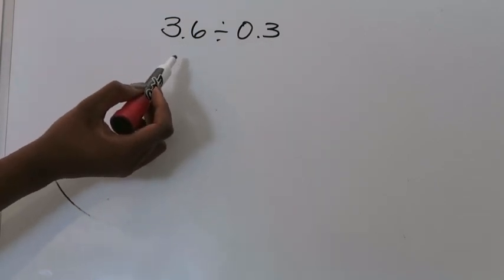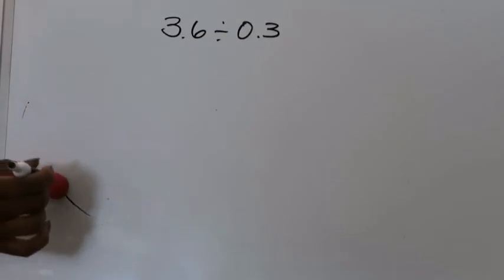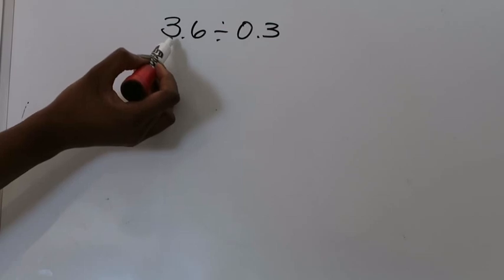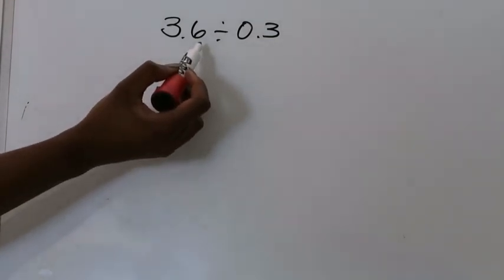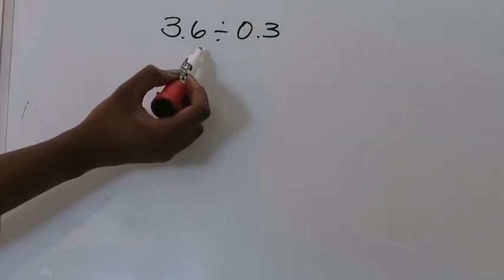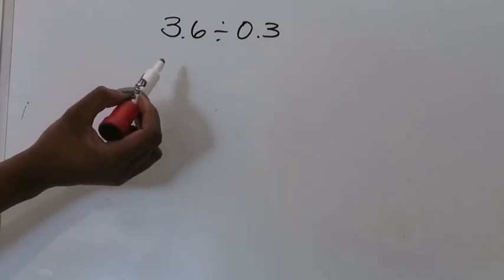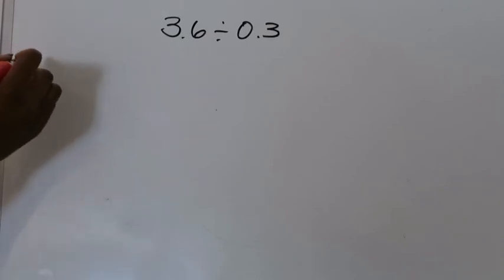I know that this is modeled in tenths, which means I need to model three and six tenths worth of tenths. Based on what I know from previous chapters, there are ten tenths in one whole, and since there are three wholes here, that means I'm going to be drawing out a total of thirty tenths to represent my three wholes, plus another six tenths — so thirty-six tenths total.